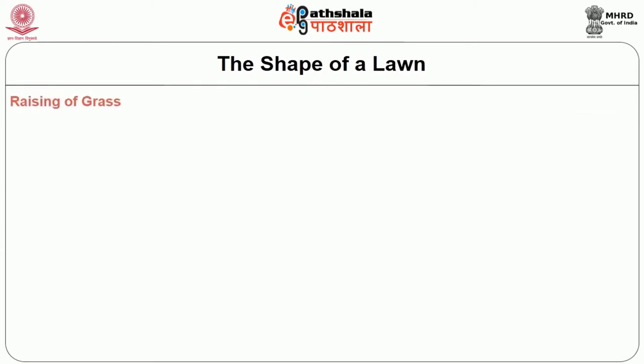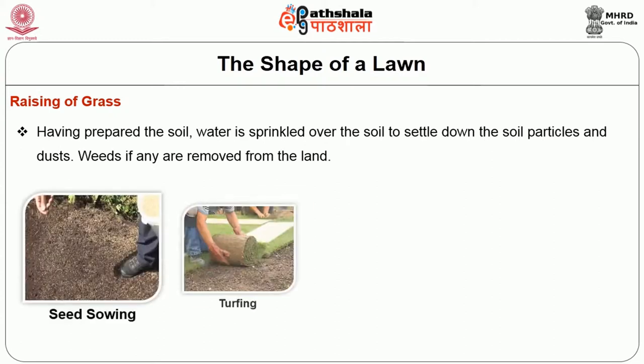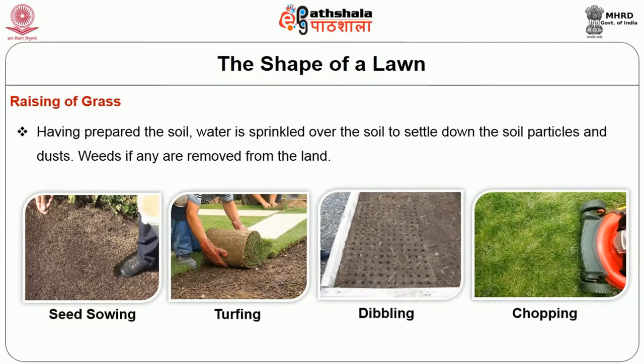Third is raising of grasses. Having prepared the soil, water is sprinkled over it to settle down the soil particles and dust. Weeds if any are removed from the land. Then grasses are planted in the soil in the following ways: seed sowing, turfing, dibbling, and chopping.